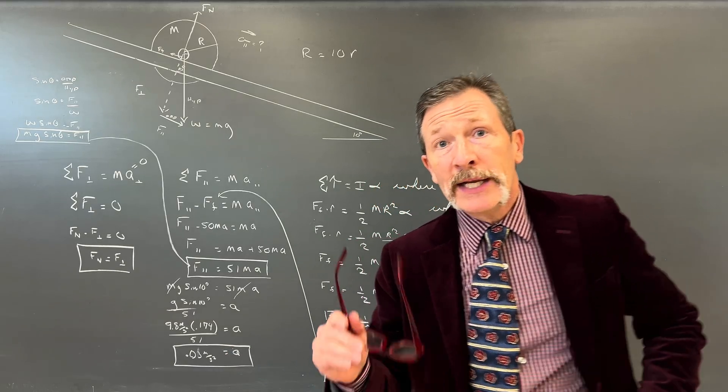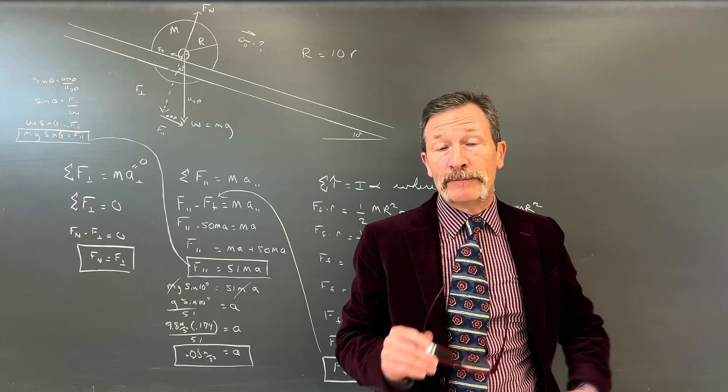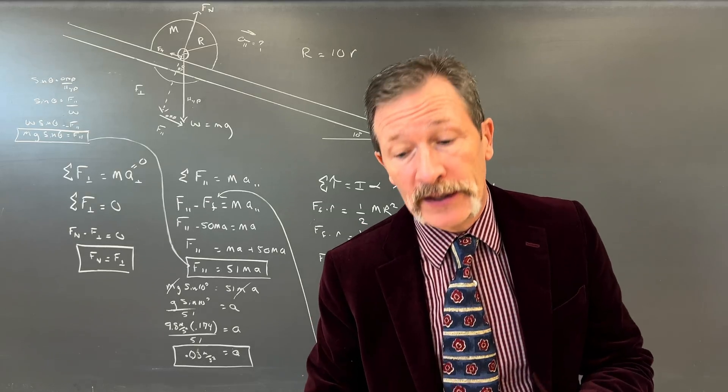Divided by 51. We put all that in together. 0.174 times 9.8 divided by 51, and we get a very, very small acceleration, 0.03 meters per second squared.